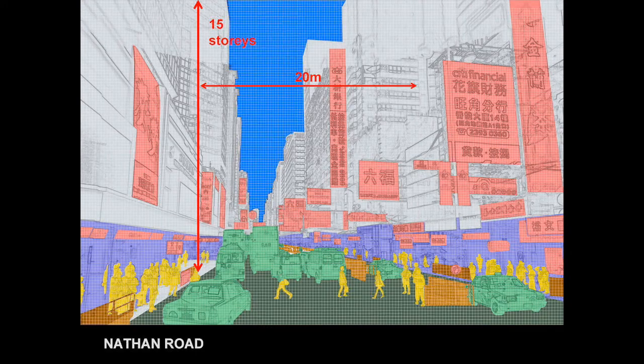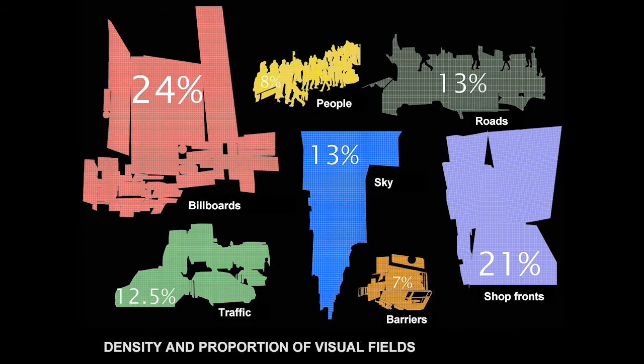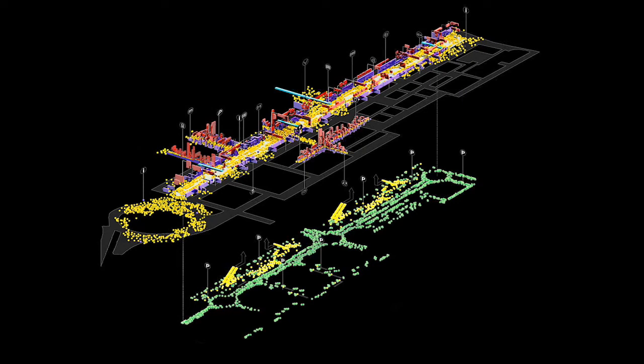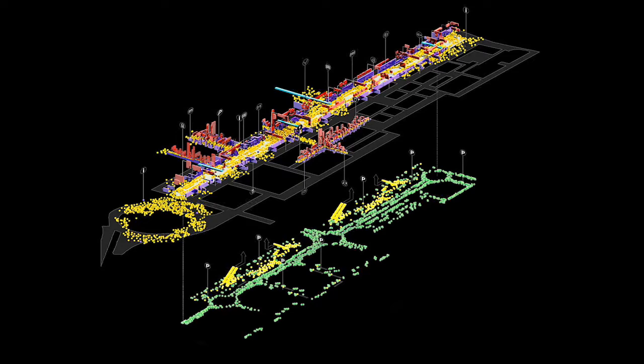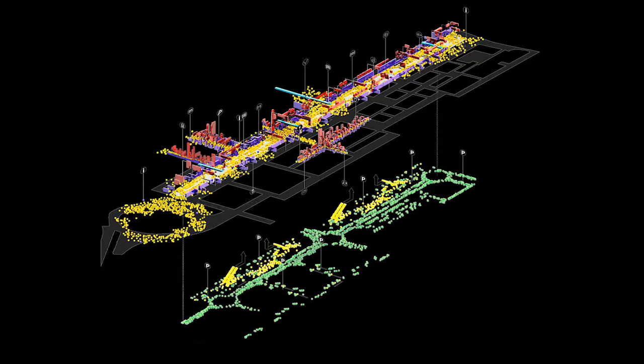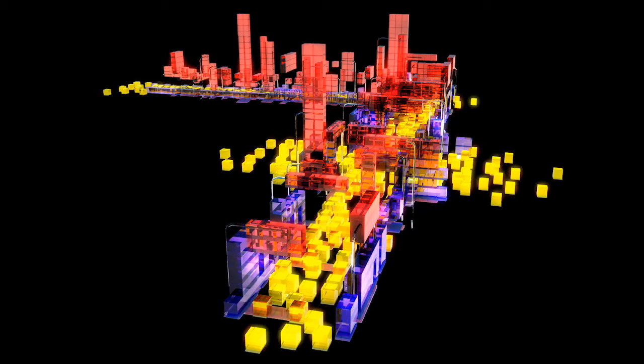Analyzing Nathan Road in terms of its signage, the retail face, the fields of cars and people — analyzing those in terms of quantum and percentage — and then working with those, not in the abstract, but without the buildings, to conjure spines of activity. The colors are constant: purple is the retail frontage, red are the signs, yellow is the people. The buildings are not there, and traffic is segregated at the lower level.